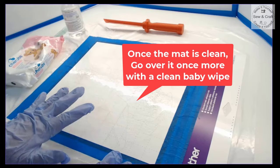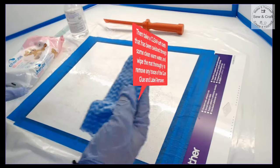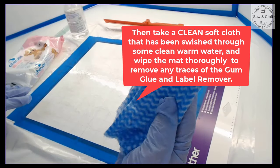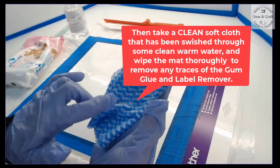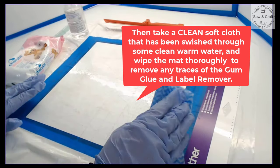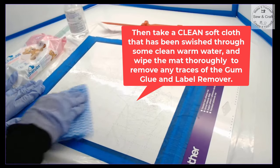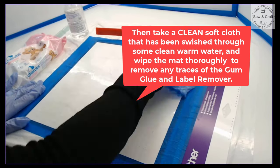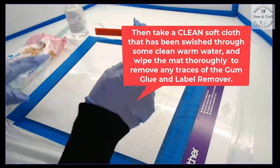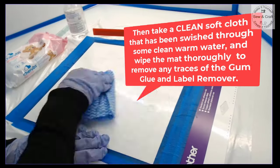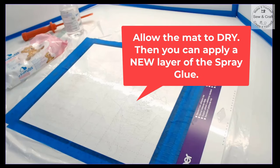Once you've removed all of the glue take another clean baby wipe and go over the mat again. Then take a clean soft cloth that you've swished through some clean warm water and then wipe the mat thoroughly because we want to remove any traces of the gum glue and label remover as well. Then you're going to allow the mat to dry and then you can go and apply a new layer of the spray glue.